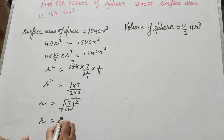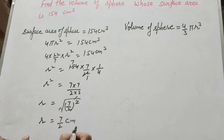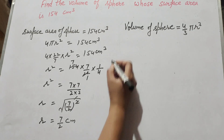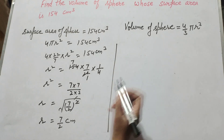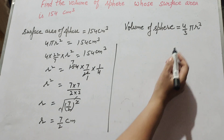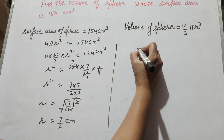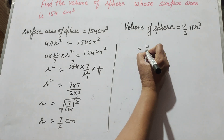The square root and the square cancel each other, so r is equal to 7 over 2 centimeter. Therefore the radius of the sphere is equal to 7 over 2 centimeter. Now we find the volume of the sphere using this radius.